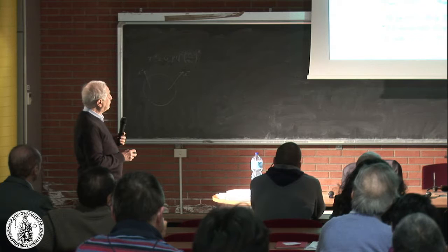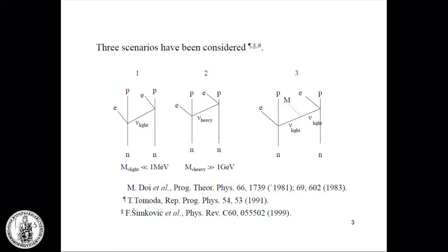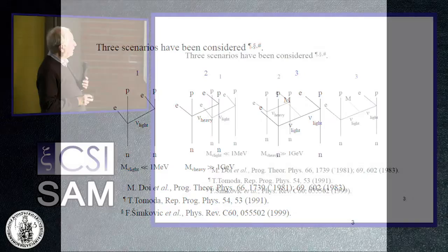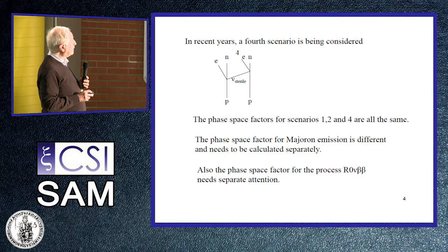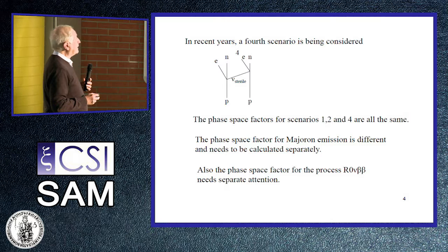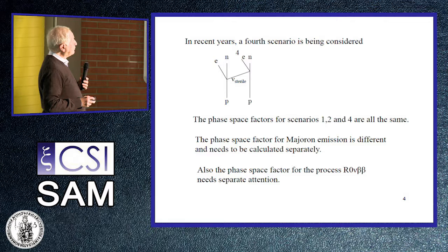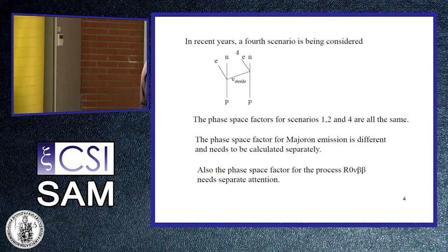We will consider three different scenarios: one with emission and absorption of a light neutrino, a heavy neutrino, or emission of a majoron. Since in recent years there has been interest in whether sterile neutrinos exist, we are also going to study the contribution of sterile neutrinos. The phase-space factors for scenarios one, two, and four are the same. When there is majoron emission, it's different and needs to be calculated separately.